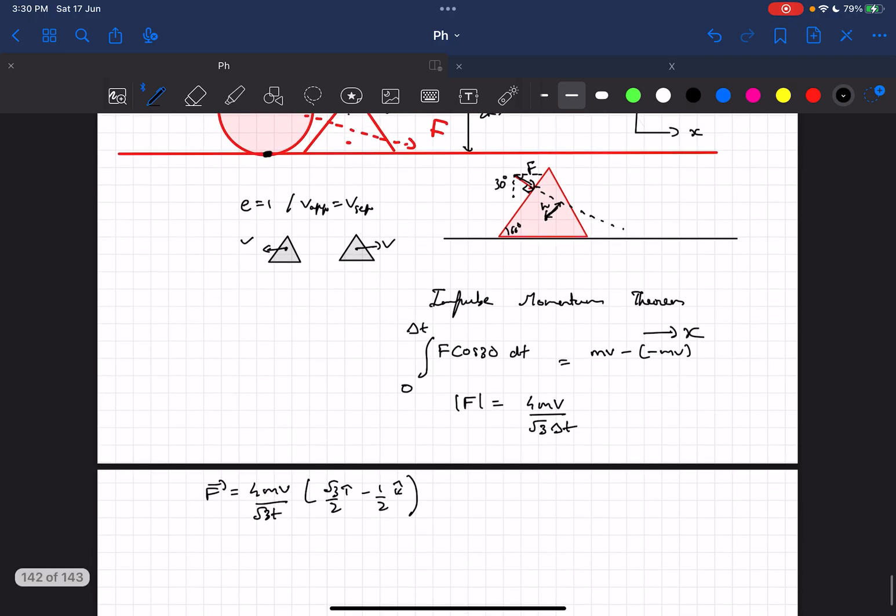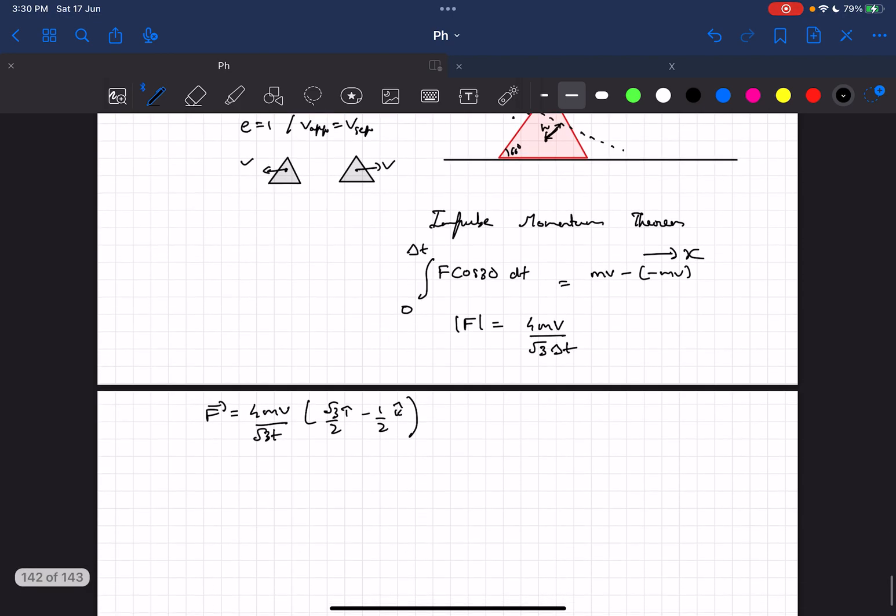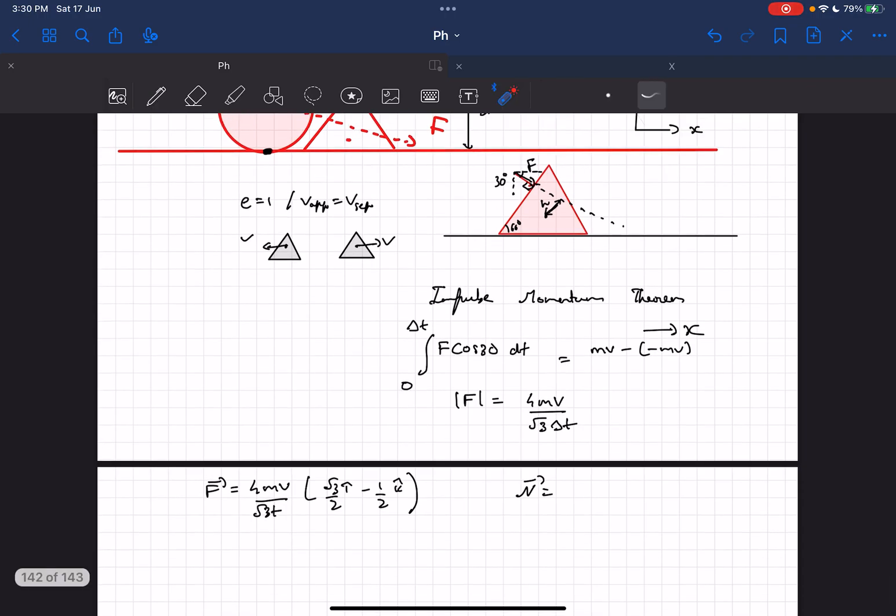We've also been asked the value of the normal. Now the normal is pretty simple. You can just see it from the free body diagram. There are only two vertical forces: F sin 30 and mg. So the normal would be equal to both of them. F sin 30 would be 2mv upon root 3 delta t plus the weight of the wedge.